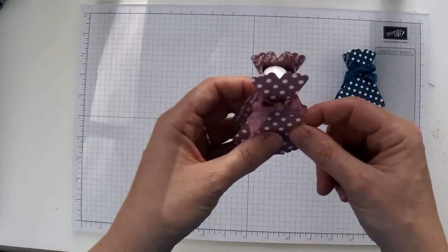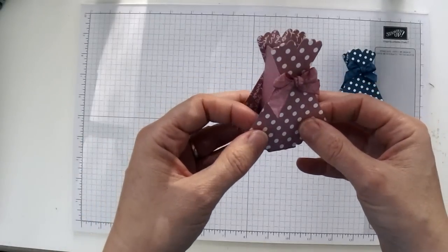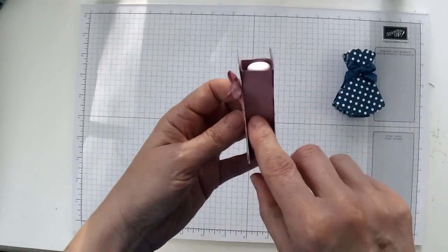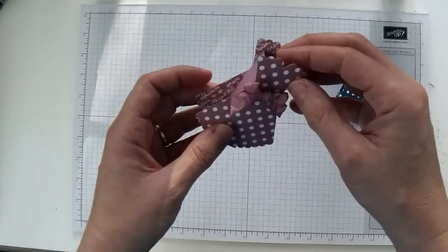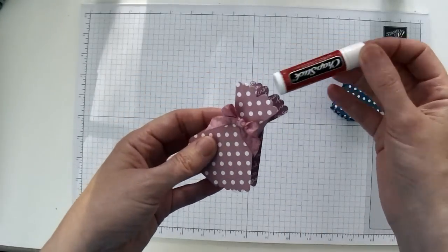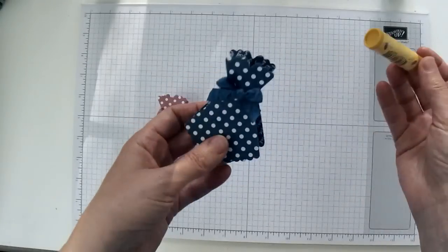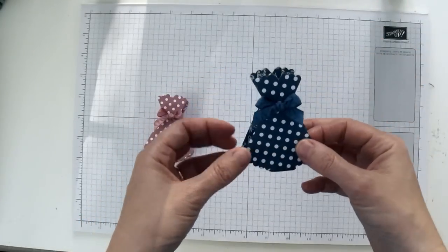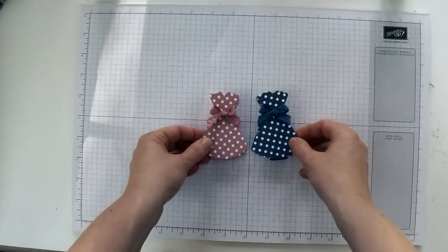This little lip balm holder is really cool. We are going to make two dresses and then a little box that goes in the center here and it holds a regular sized lip balm. It just slides in and out like that and I think these would make really cute favors.